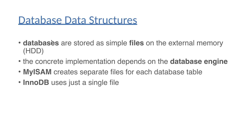The first question is how the database engine is going to store the database tables. Databases are stored as simple files on the external memory, so on the hard drive disk. The concrete implementation depends on the database engine itself. In one of the previous lectures, we talked about the two main types of MySQL database engines: MyISAM and InnoDB. MyISAM creates separate files for each database table, so whenever we create a new table, a new file is created. InnoDB, on the other hand, uses just a single file.